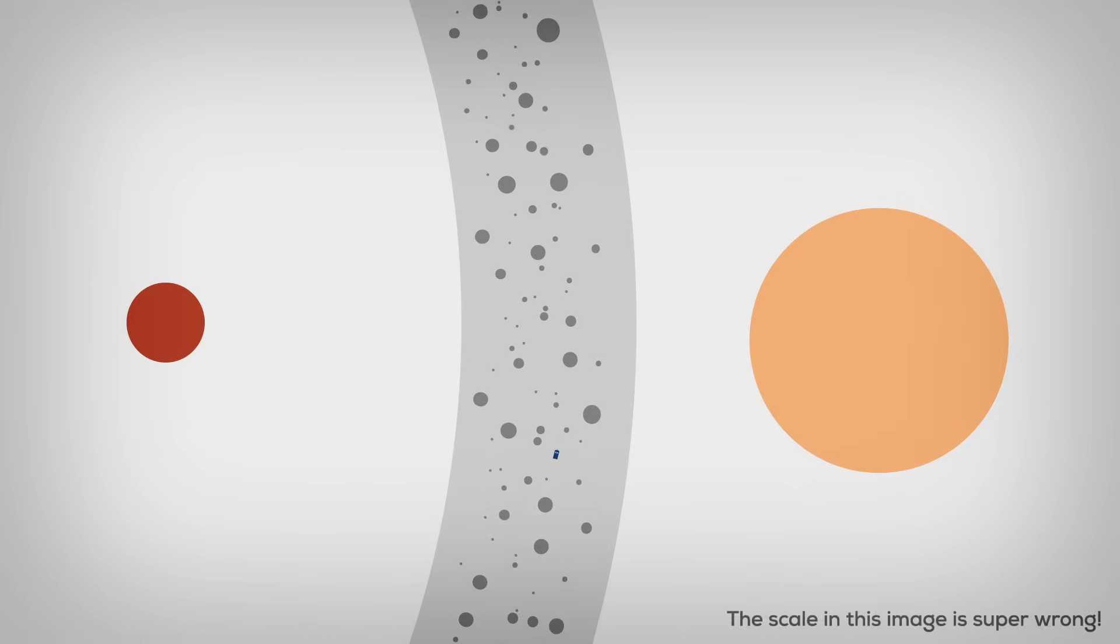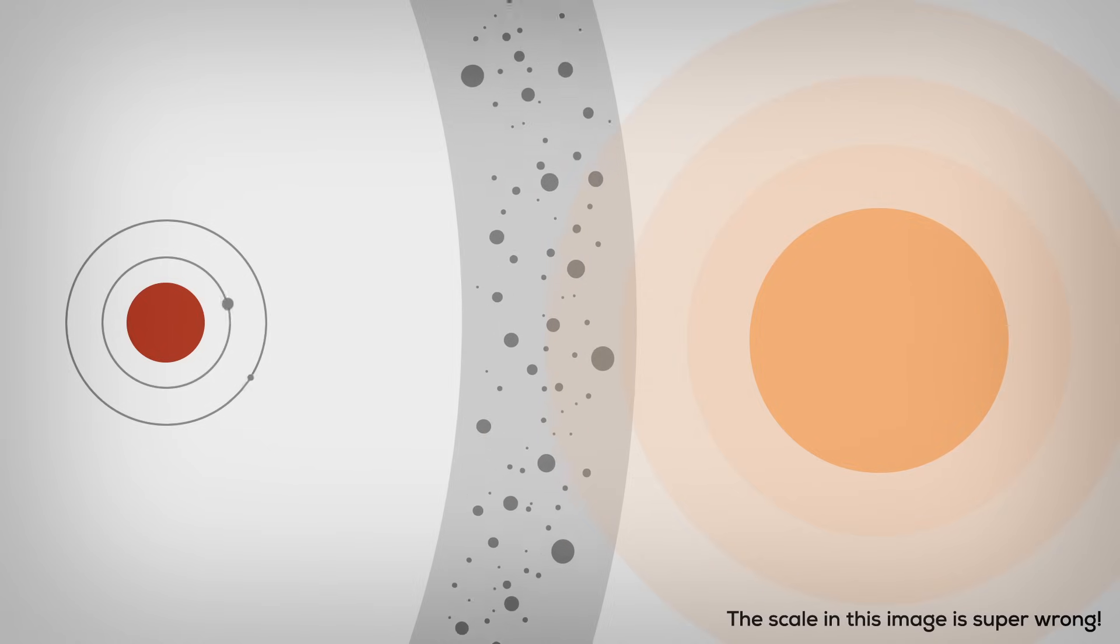The most popular theory of their origin is that they were once part of the asteroid belt until Jupiter's massive gravity kicked them out of it, so Mars could catch them.